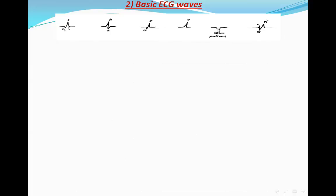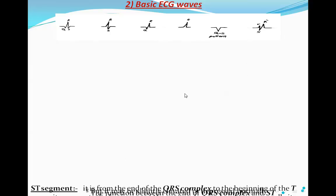When there is only one negative deflection with no positive deflection, we cannot determine whether it is Q or S, so we call this a QS pattern. There is also a unique pattern called RSR' — both R and R' are positive, with an S wave between them because it comes after the first R. We will find this RSR' pattern in right bundle branch block.